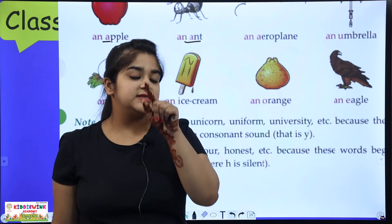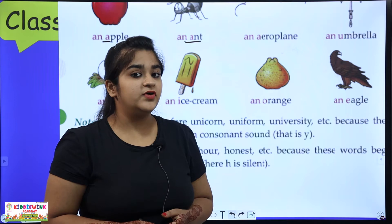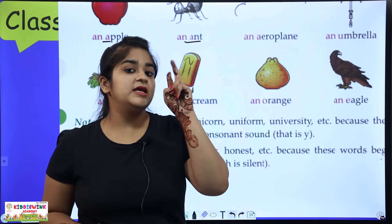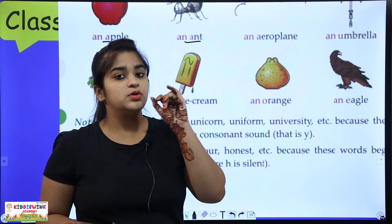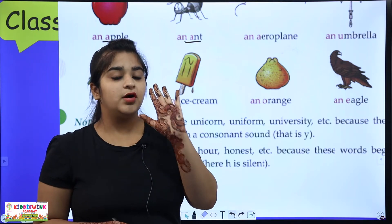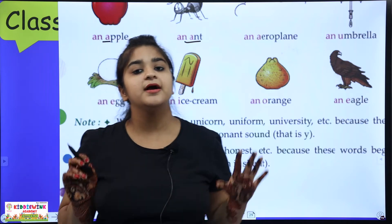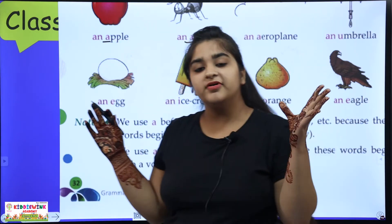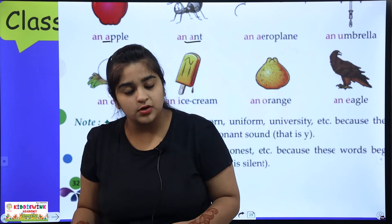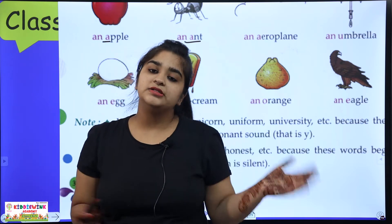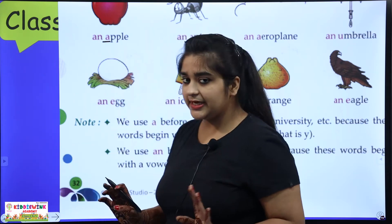So, when a word starts with E — and E is a vowel — what will come before it? AN. Whatever word begins with these five vowels, AN will always come first. And before all the other consonants, A comes. Is that clear?